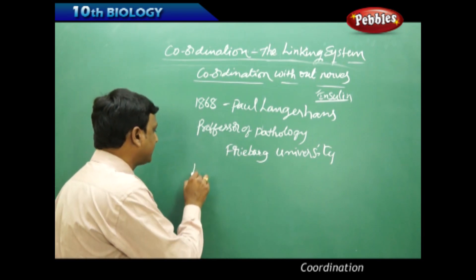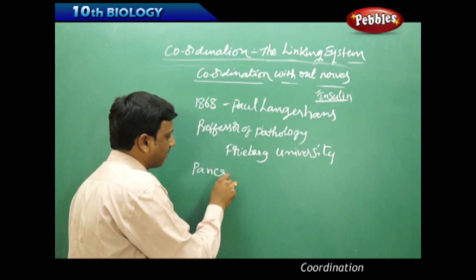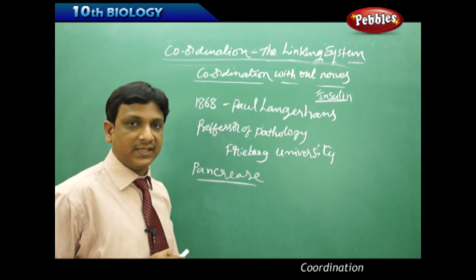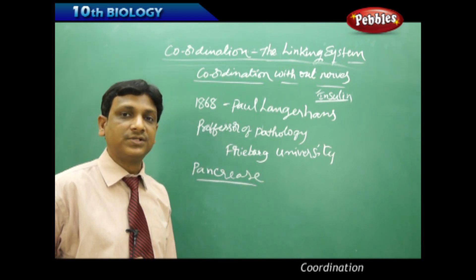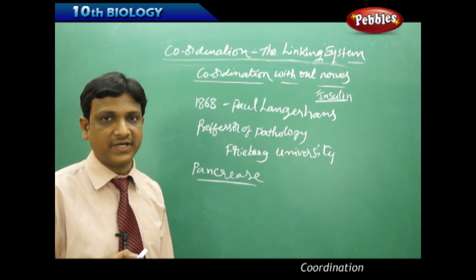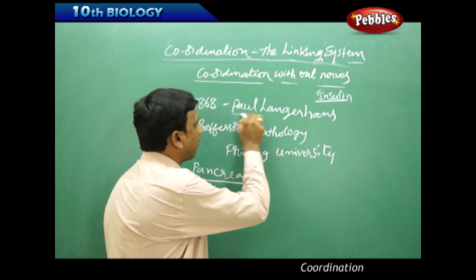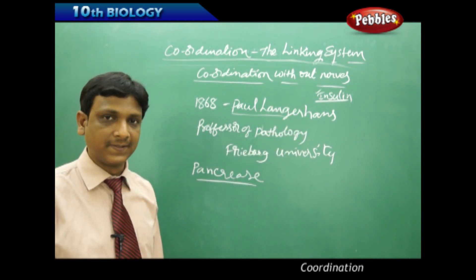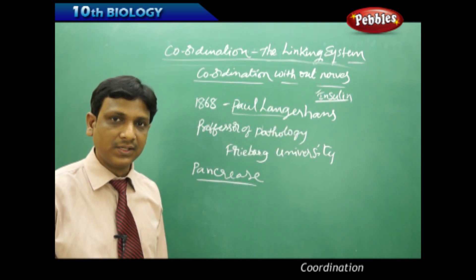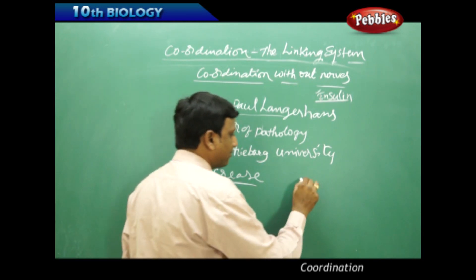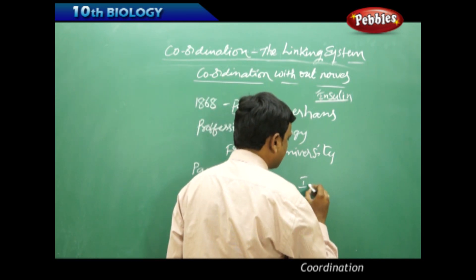He observed the cells of the pancreas. The pancreas is a part of our digestive system and is responsible for producing pancreatic juice, which aids in the process of digestion. But Paul Langerhans observed that there are some cells in the pancreas which are floating like small islands, and he called them islets.